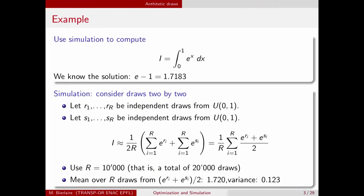Let's use a very simple example to illustrate the idea of antithetic draws. I will use simulation to calculate an integral — this is called Monte Carlo integration. This integral is easy to calculate analytically; this is the value I obtain. But now I will calculate it also by simulation. We draw from the uniform(0,1), because the integral is between 0 and 1. For each draw, we take the exponential and then take the average. I will consider the draws two by two, and you will see why in the next slide.